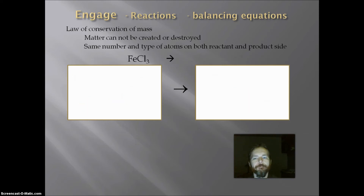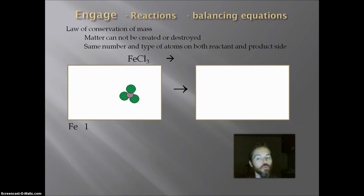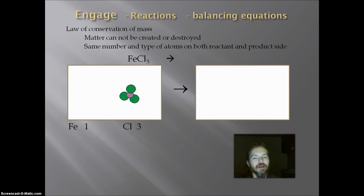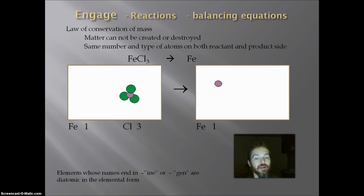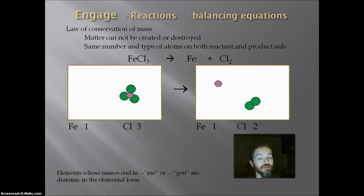Let's try one more: iron three chloride, FeCl3. I have the purplish iron and three chlorines, so there is one iron and three chlorines on the reactant side. If I only have one reactant, that means it has to be a decomposition reaction. It's a binary compound, so it will break apart into its elements: iron and chlorine. Remember that elements whose names end in -ine or -gen are diatomic, so chlorine's formula is Cl2, giving me two Cls on the product side.